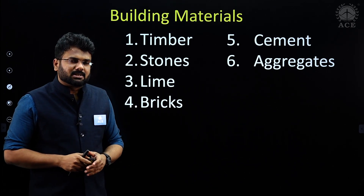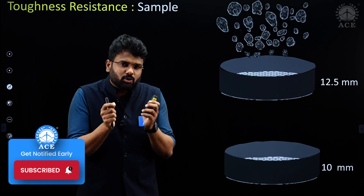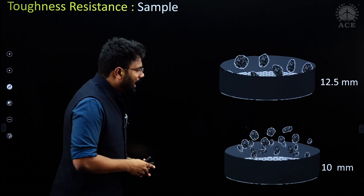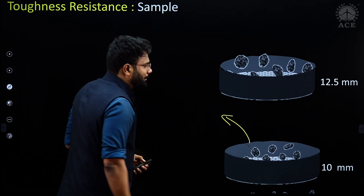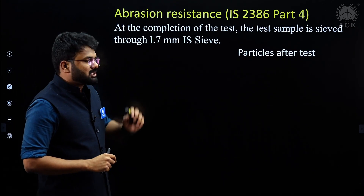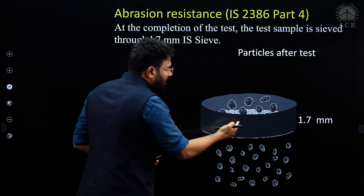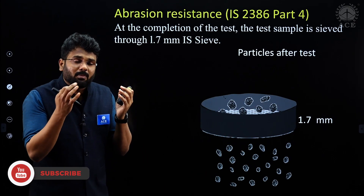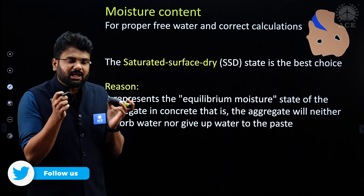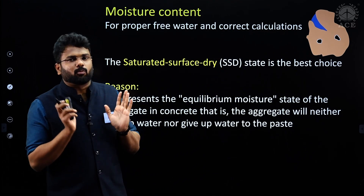Next we will move on to aggregates, where different tests have to be performed. For the toughness test, your sample is passed through 12.5 mm and then 10 mm — whatever is retained is your sample. For the abrasion test, the final result is expressed using a 1.7 mm sieve, and you report how much passes through it. We will also understand in which state aggregate has to be added — basically the surface should be dry and the voids should be full of moisture.